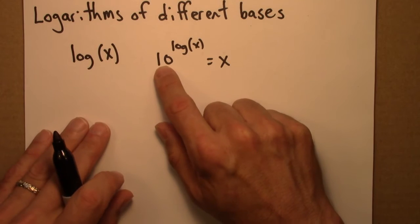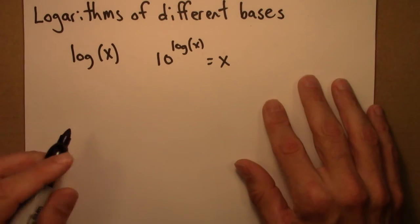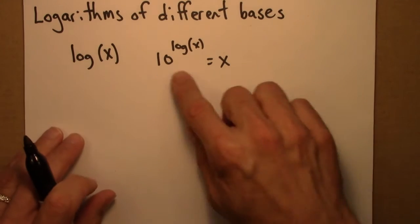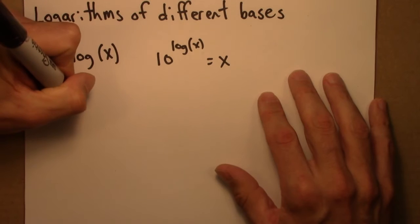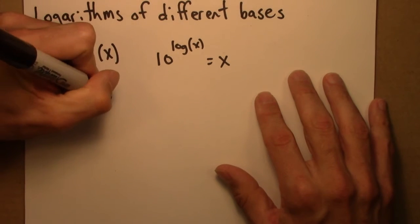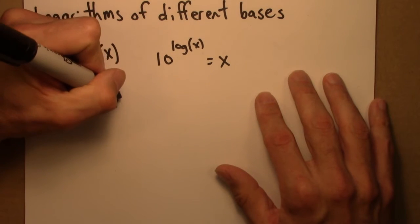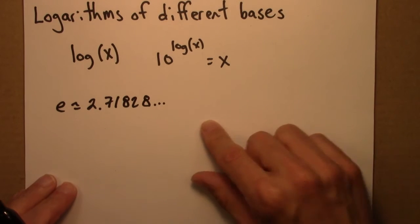But we could work with another number, a different base for this. And it turns out that a popular base is to use the number e. So e is a number like pi. It's irrational and goes on and on. That's its approximate value.